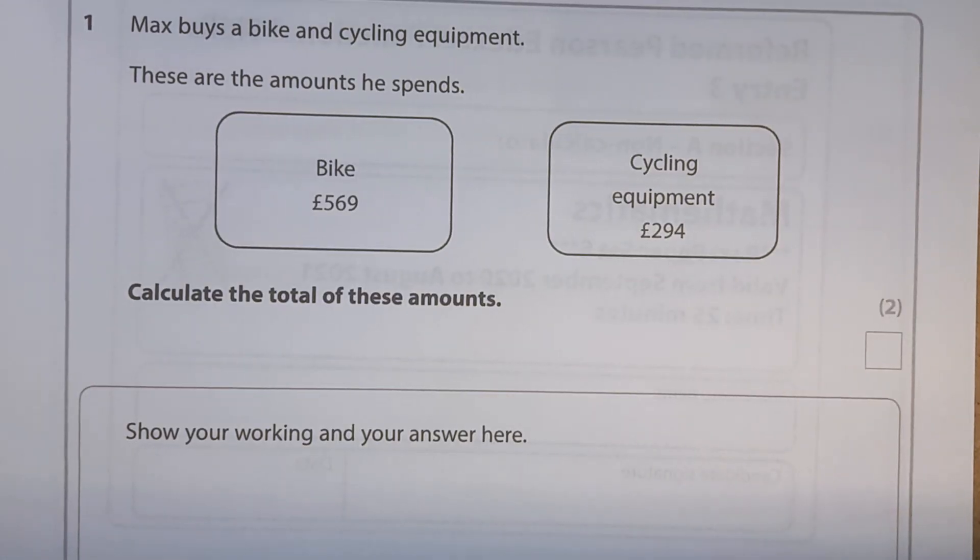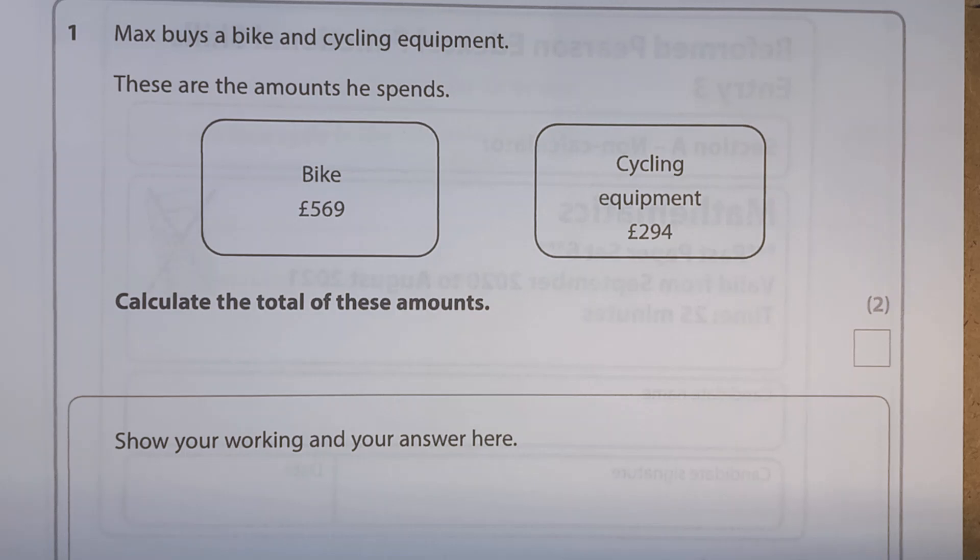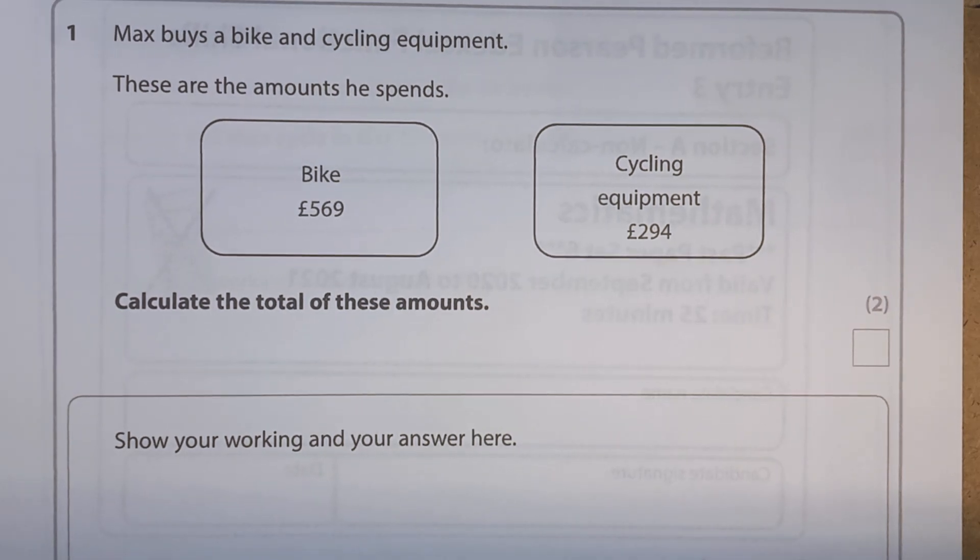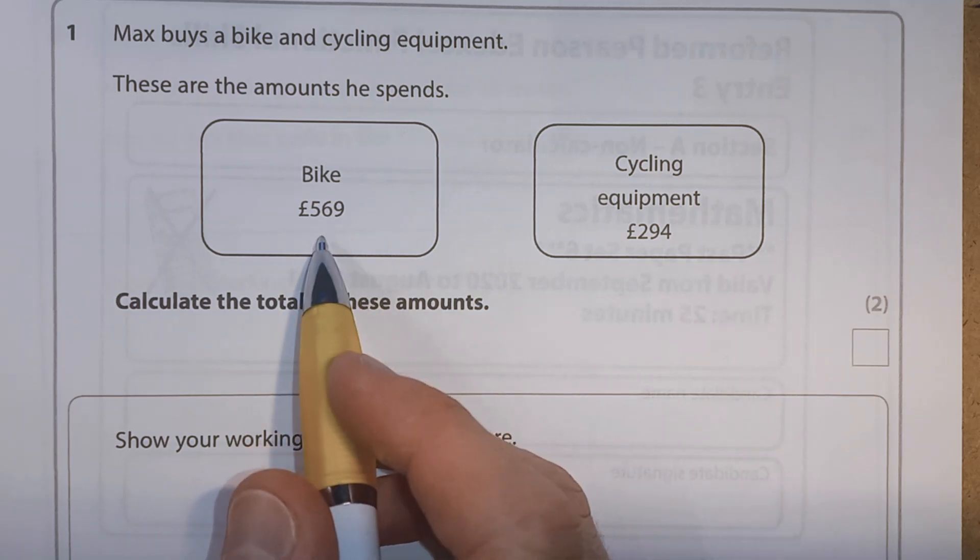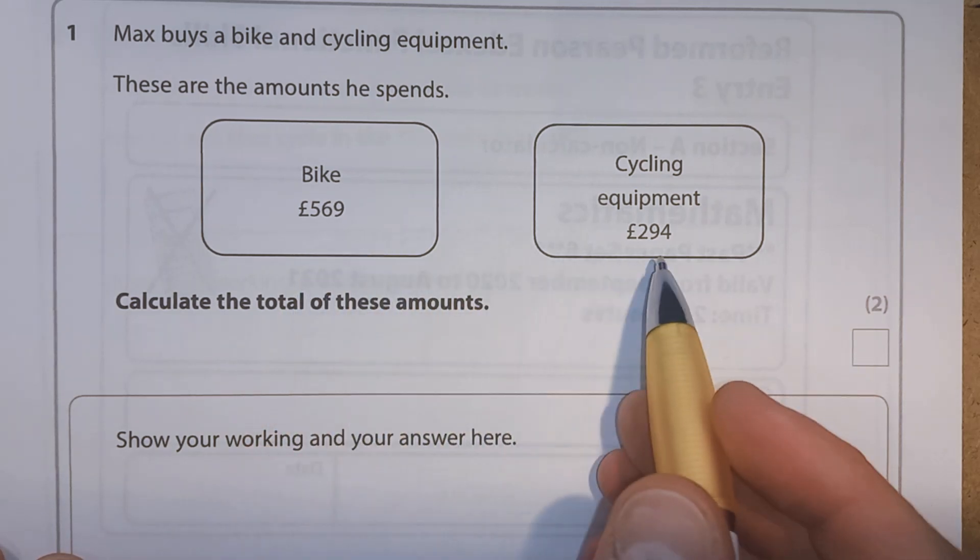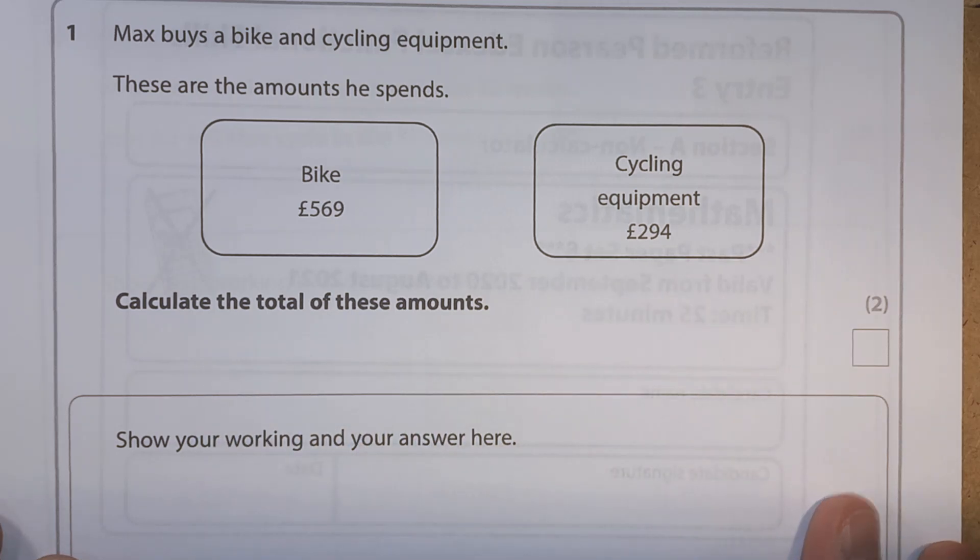Question 1. Max buys a bike and cycling equipment. These are the amounts he spends. So we've got a bike, it's £569. Cycling equipment, £294. Calculate the total of these amounts.